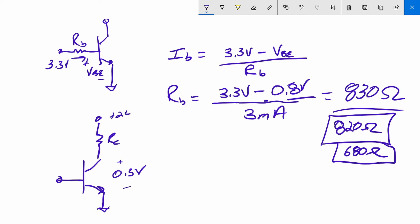And this was 24 volts up here. And so our collector current I_C was equal to 24 minus 0.3 volts, all divided by R_C.